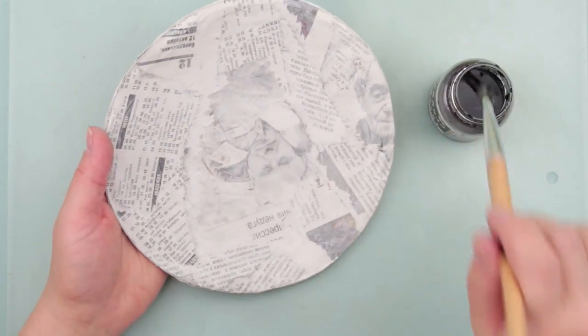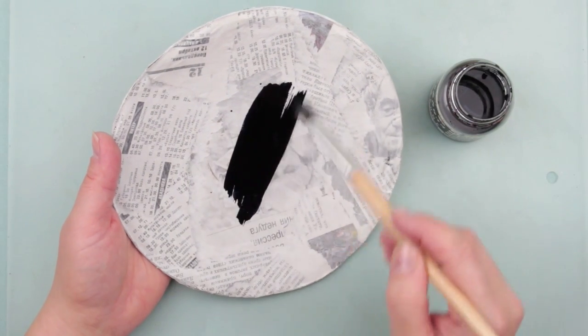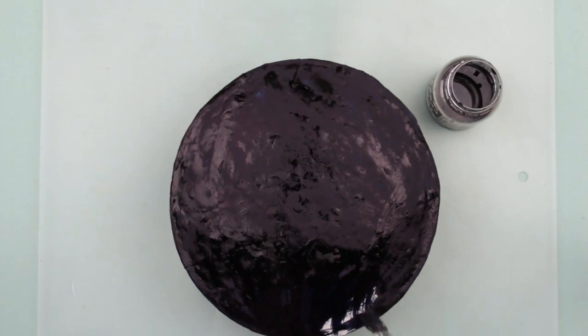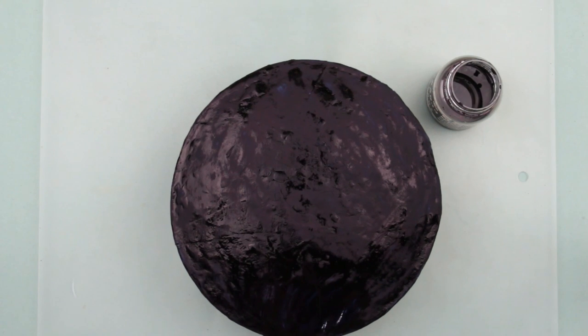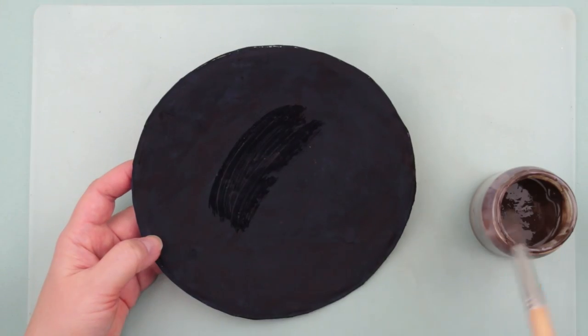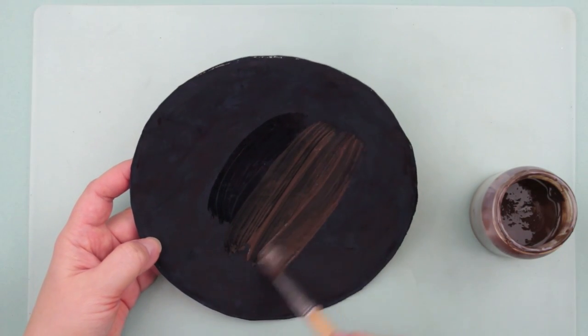When it's dry, cover the plate with black ink. This background will be perfectly fit for a bright mosaic. Add some gloss by covering the surface with tinted acrylic lacquer.